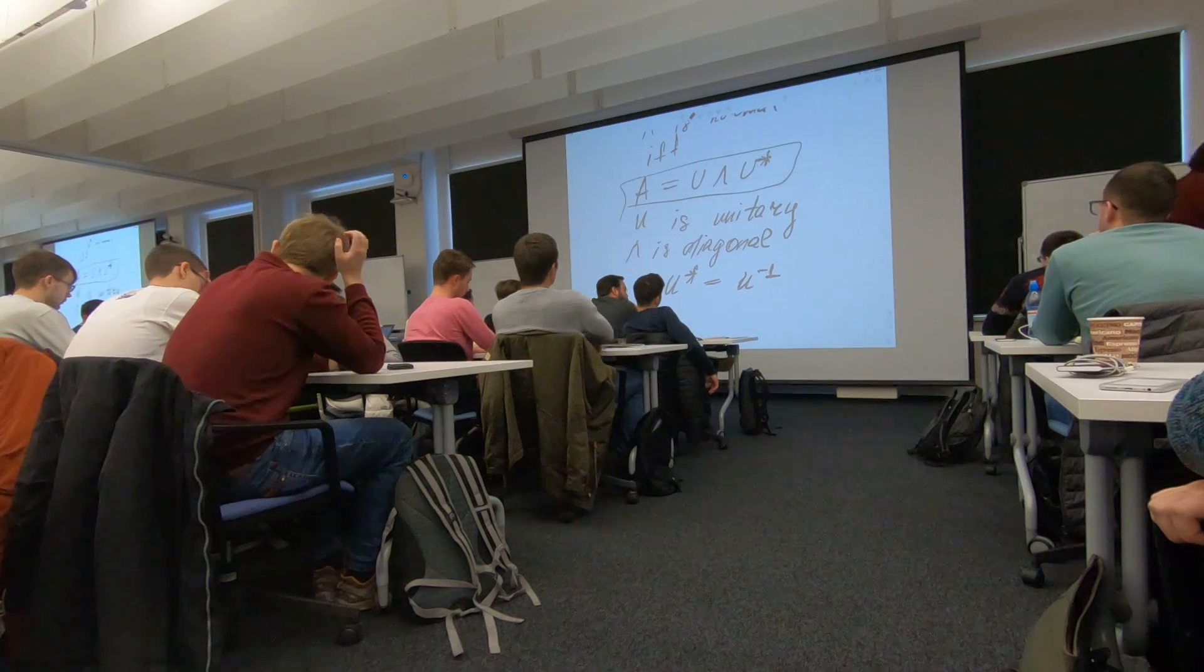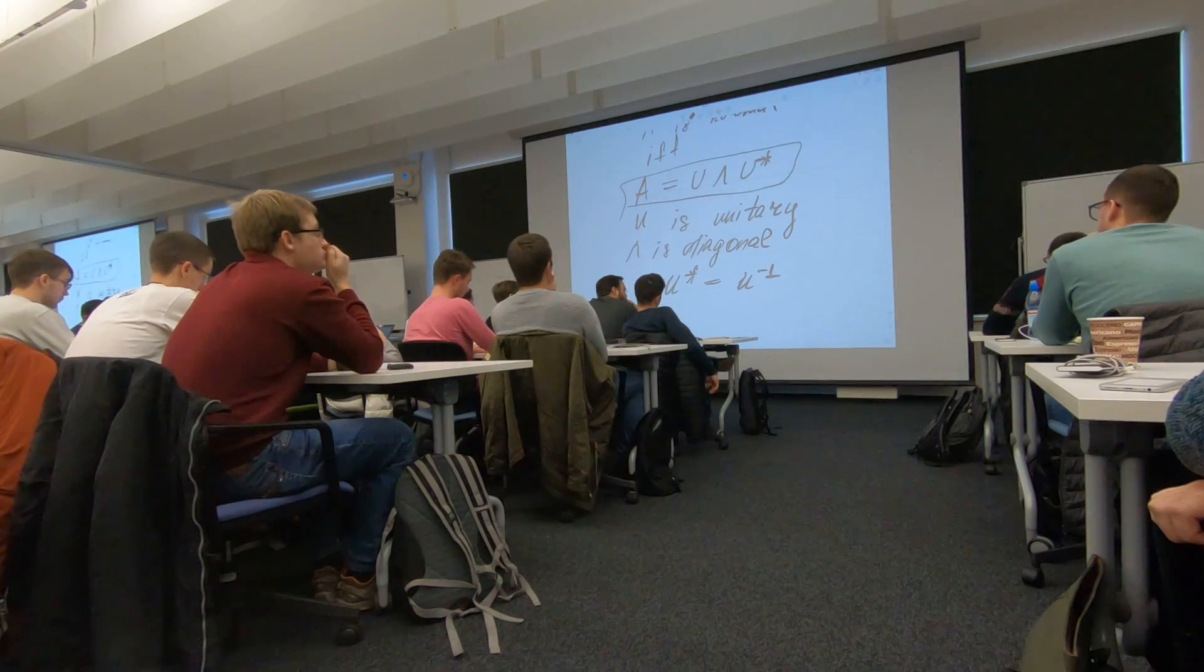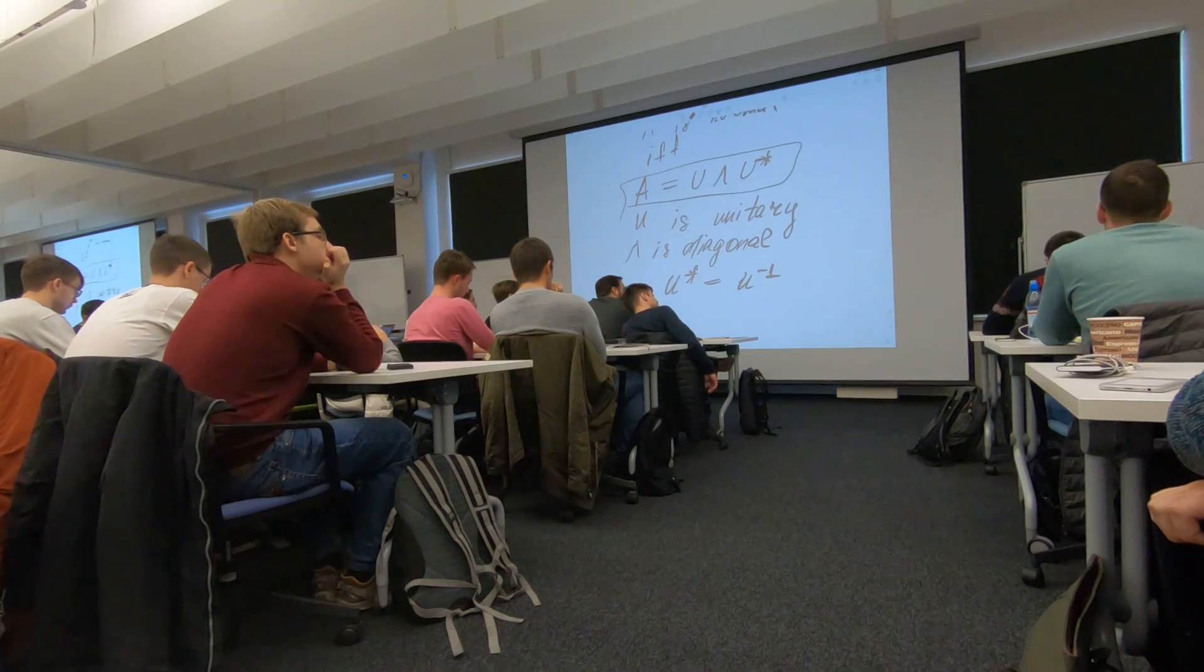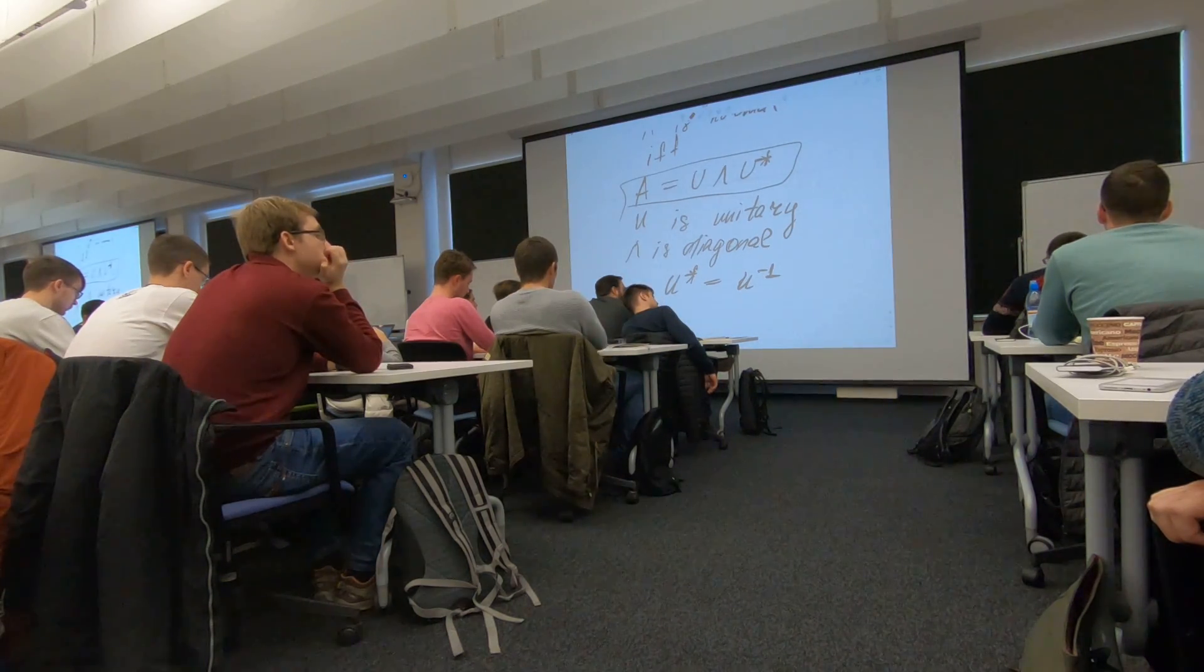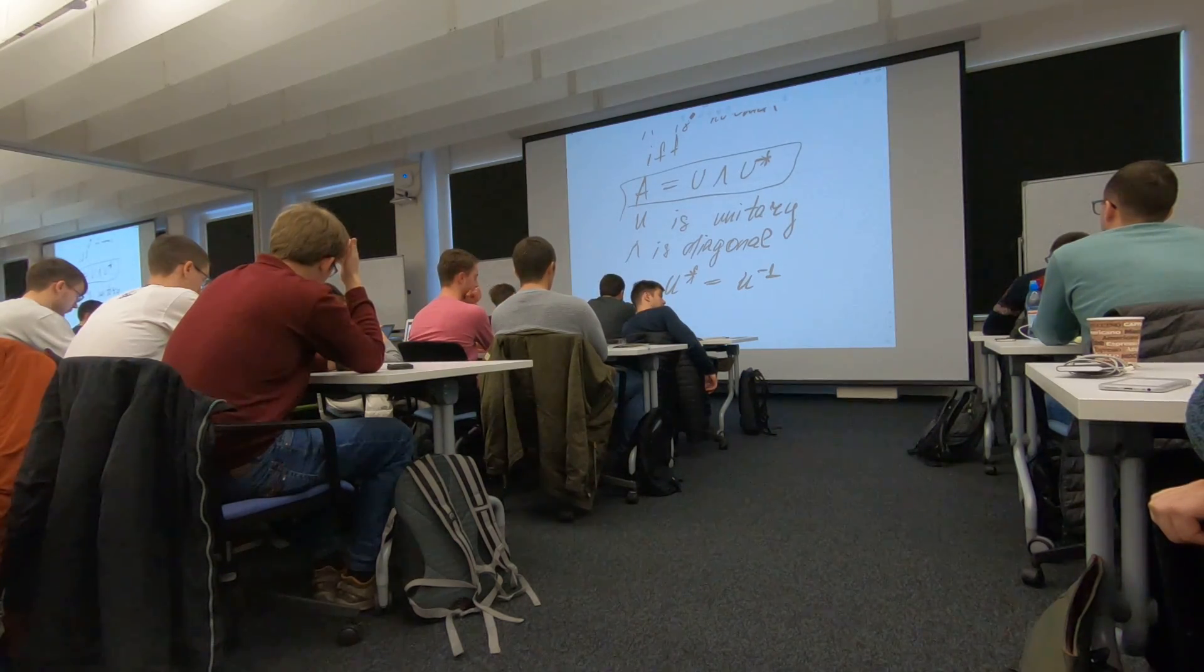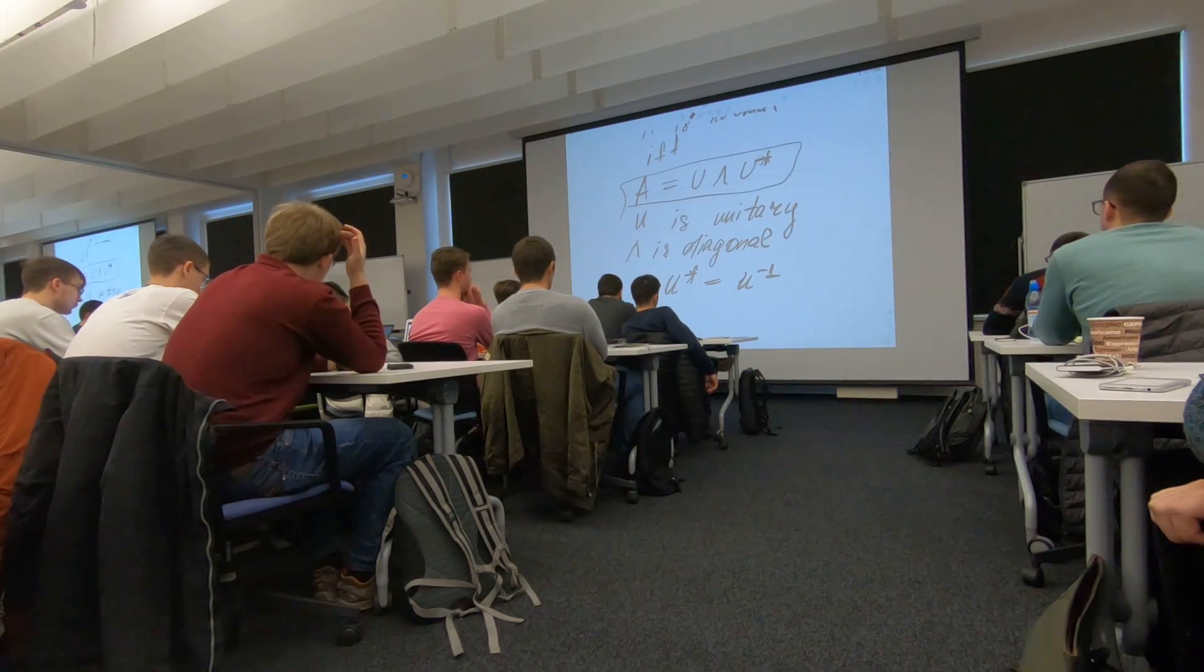So this is the ideal case. For example, if you have Hermitian matrices, Hermitian matrices, obviously, it is obviously a normal matrix, because A star equals A.